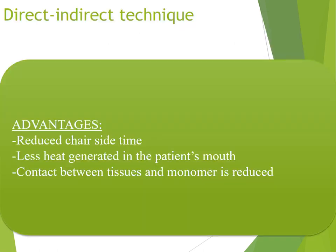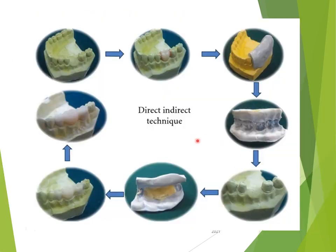In the direct-indirect technique, advantages include reduced chair-side time and less heat generated in the patient's mouth, with reduced contact between tissue and monomers. Half of the procedure is done in the lab and half in the patient's mouth. Using a cast with the missing teeth and an impression taken of the patient, you place temporary teeth and make a putty index. You load the temporary material, place it, and the provisional restoration is ready — then trim it off and place it in the patient's mouth.